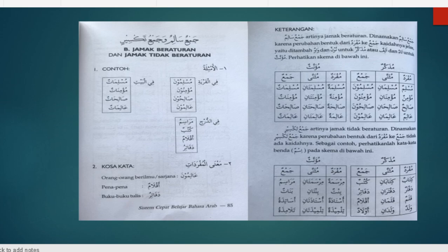Untuk mengenali bentuknya, kalau mau mufrad tidak ada tambahan apa-apa. Kemudian kalau mau mutsanna, dia ada tambahan di akhir isim yaitu Alif dan Nun, atau disingkat dengan Ani atau Aini, yang sebelumnya berbaris fathah. Jadi Alif dan Nun adalah tambahan untuk mutsanna. Contohnya seperti kata mufradnya Kitabun, satu buah buku.